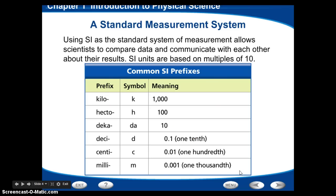Okay, so you're going to hear terms like kilo, hecto, deca, deci, et cetera. Kilo, the symbol is K, and it means a thousand. Hecto is H, means a hundred. Deca is DA, and that means ten.